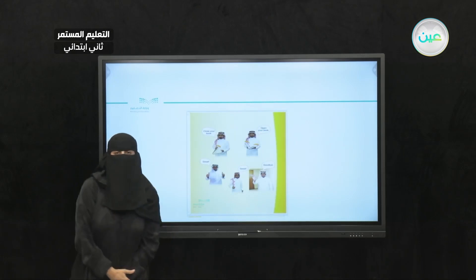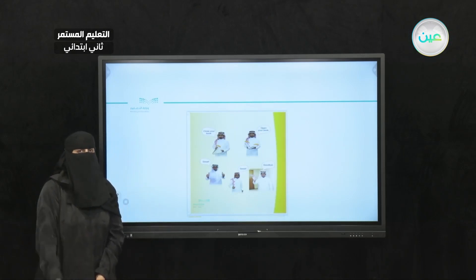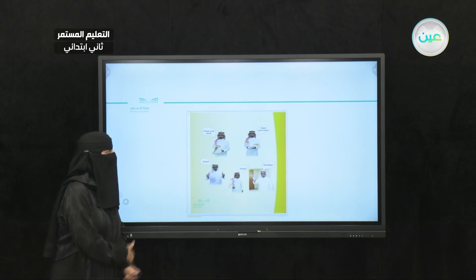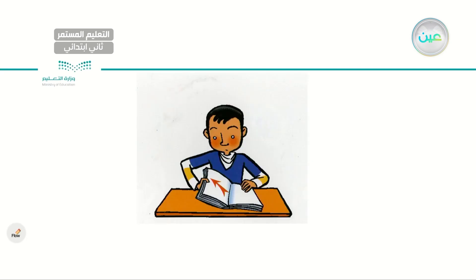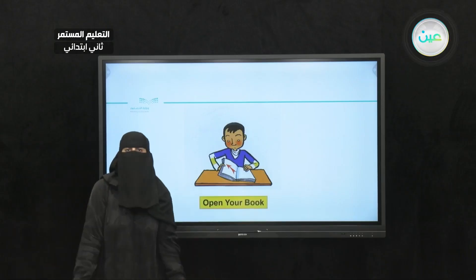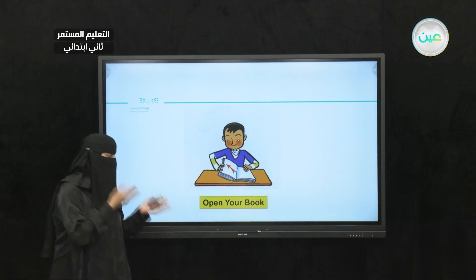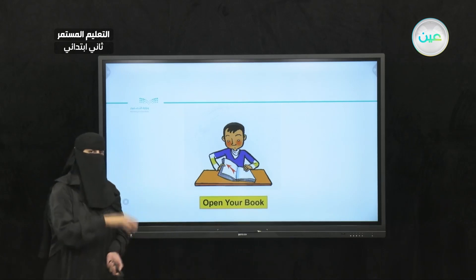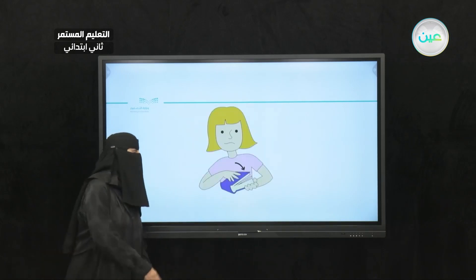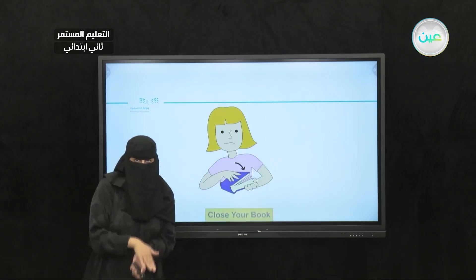These are some of the instructions that we need to practice over and over. We have: close your book, open your book, great, good, and goodbye. These are words and terms that we might use repeatedly. Here we have a picture of a boy — what is he doing? Open your book. So we will be opening our books. Open your book at page 10 or at page 29, for example. When we are done, we will be closing — so close your book, my dear student.